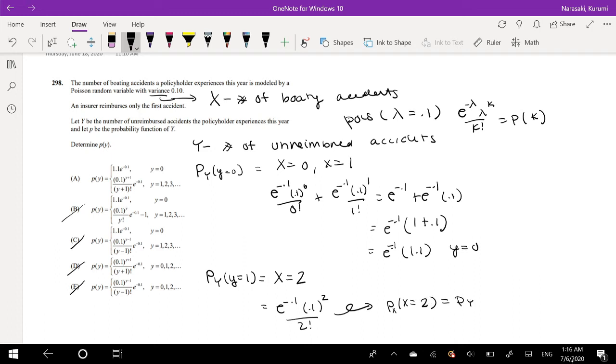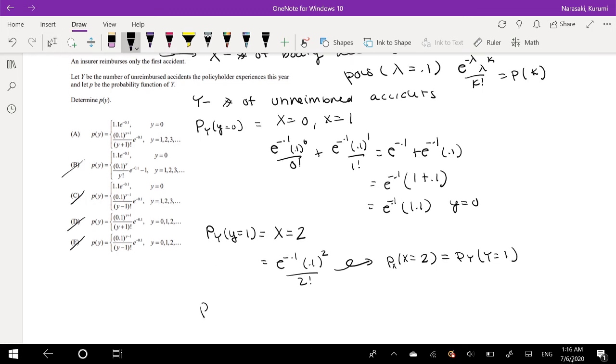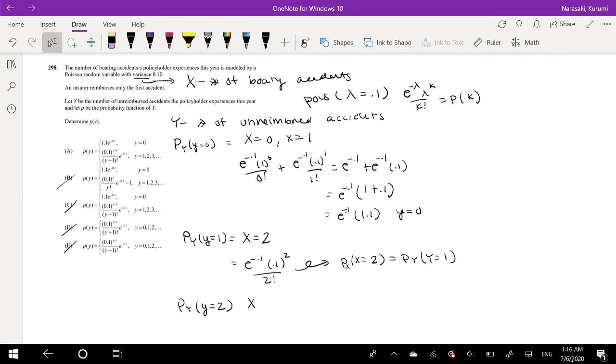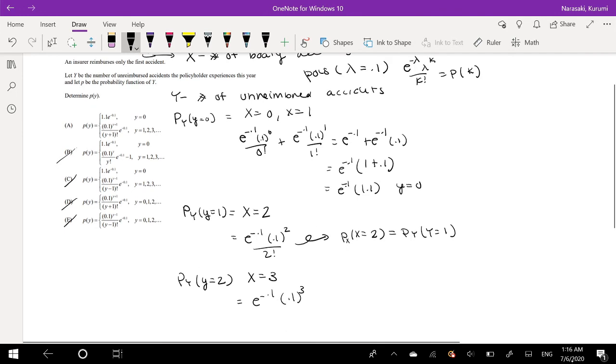We can also see the same thing for when y is equal to 2. That means for the number of unreimbursed accidents equal to 2, that happens when the number of boating accidents is equal to 3. So this is equal to e to the negative 0.1, 0.1 to the 3, over 3 factorial, which is also the same thing as the probability of x equals 3.